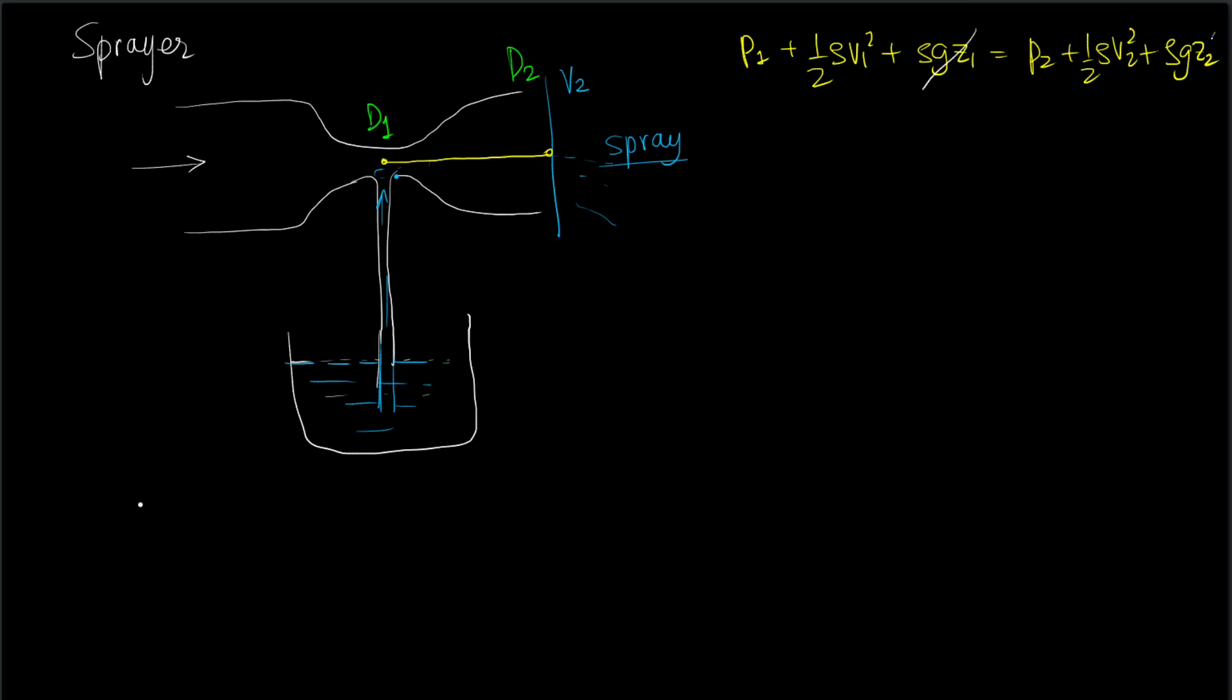Given that the two locations are at the same altitude, this particular set of terms cancel out. And point number 2 is discharging to the atmosphere, therefore p2 is going to be p_atm. So we have p1 + 1/2ρv1² = p_atm + 1/2ρv2².